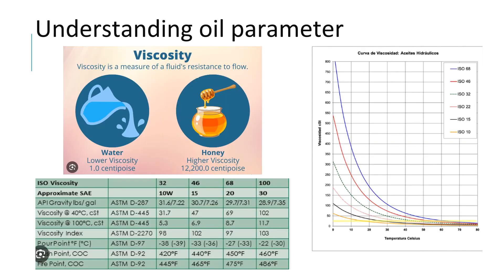Let us understand viscosity properties in one or two minutes before we go to the main topic, because it is very important to understand some key concepts here. We can see two pictures — one is of water and another is of honey. All of us know that water flows very easily and honey does not. Water has low viscosity and honey has high viscosity — low viscosity means easy to flow, high viscosity means difficult to flow.